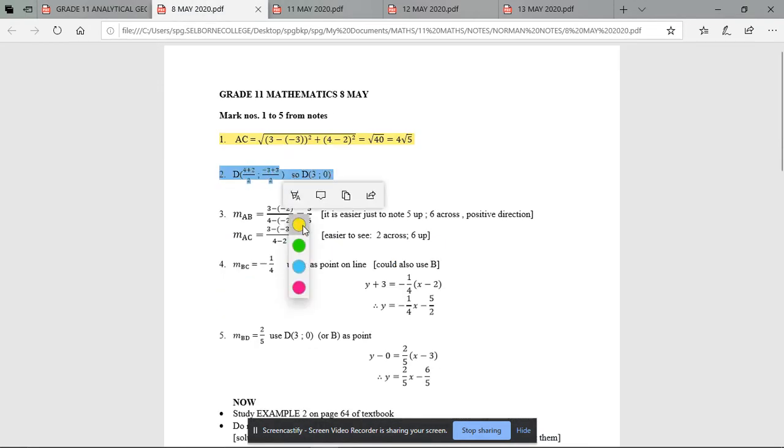D, first of all it says there, 4 plus 2 divided by 2, so the two X values, so that's 6 over 2 is 3. And then the Y values, negative 3 plus 3 divided by 2 is 0 over 2, so 0. So there's these coordinates 3 and 0.